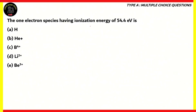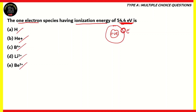Now let's look at this question. The one-electron species having an ionization energy of 54.4 electron volts is: (A) hydrogen, (B) helium plus, (C) B⁴⁺, (D) lithium 2+, (E) beryllium 3+. All of these are one-electron species, which means they have a positive nucleus orbited by a single negative electron. How do we calculate the ionization energy? The ionization energy for the first electron to leave would be the negative of the energy of the first orbit, since we only have one electron here.